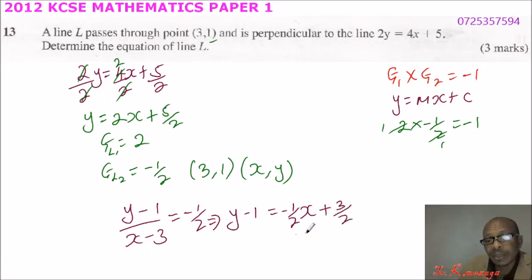So we take 1 to the other side, we have y equals, it becomes positive, this is 1, 1 and a half plus 1, that will give you 2 and a half. So we say it is minus 1 half x, this is plus 2 and a half.